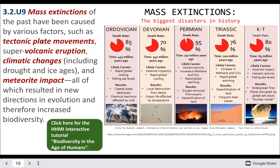Here's a brief overview of the mass extinctions of the past. You don't have to know specifically what the Permian extinction was compared to the Devonian, but you should be familiar with major extinctions and what might cause them — for example, changes in climate, asteroid impacts, changes in carbon dioxide or greenhouse gases, and volcanic activity.